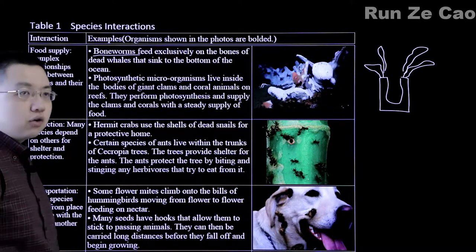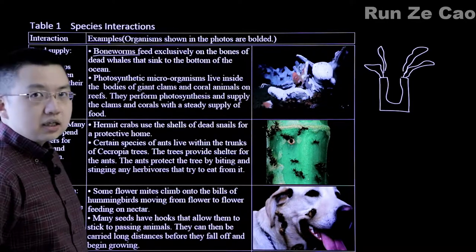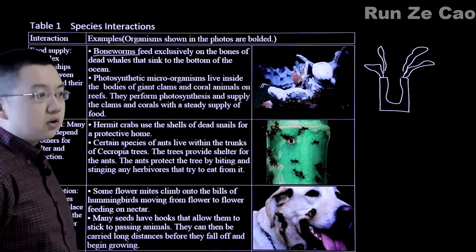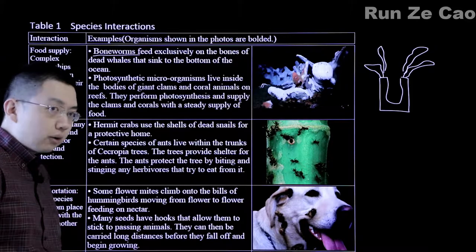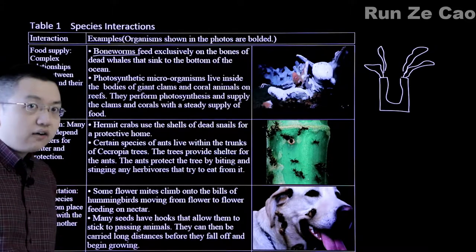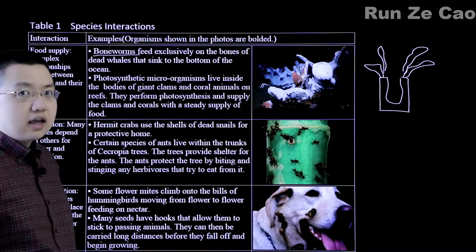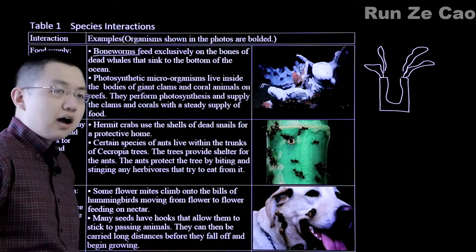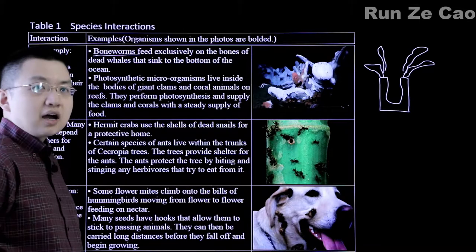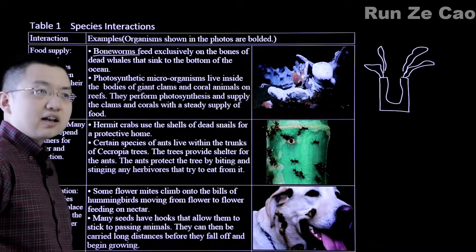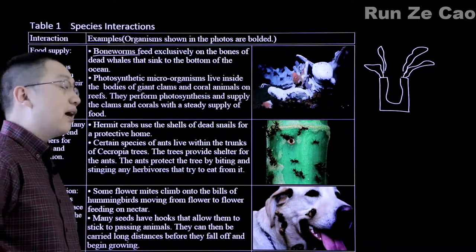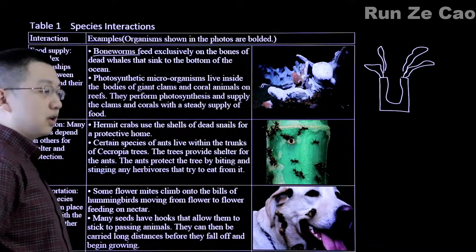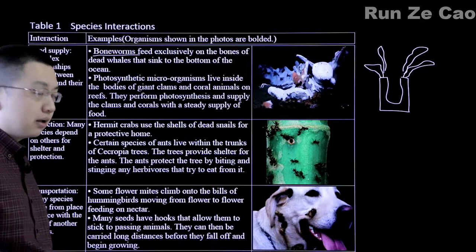Ejecting the algae leaves the coral without that steady stream of food. Hence, why coral bleaching is, while recoverable, often a sign of an impending die-off if the corals cannot get enough food without the algae helping them.